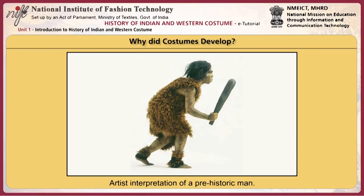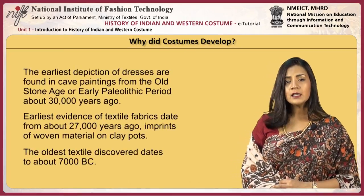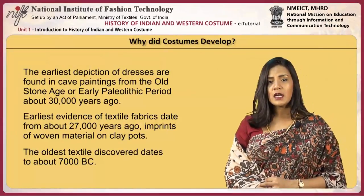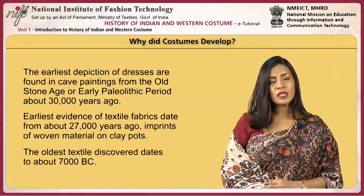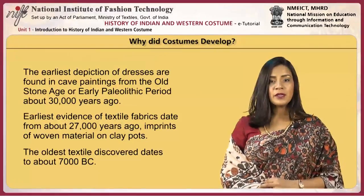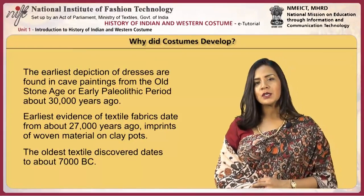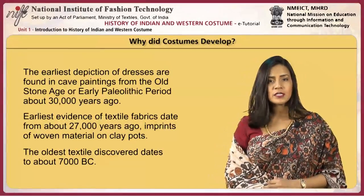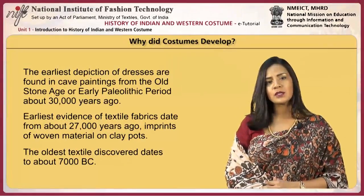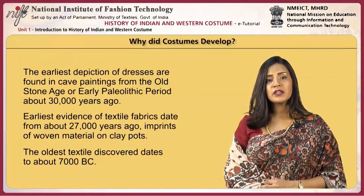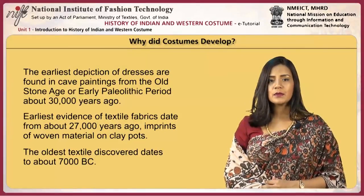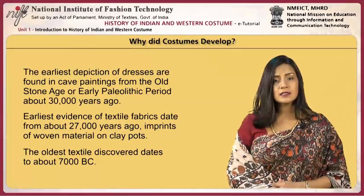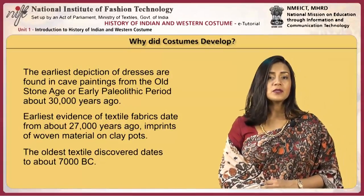Yet very little of these items have survived for us to understand how exactly they looked. The earliest depictions of dresses are found in cave paintings from the old stone age or early Paleolithic period, about 30,000 years ago. Earliest evidence of textile fabrics date from about 27,000 years ago, as imprints of woven material on clay pots. The oldest textile discovered dates to about 7,000 BC.